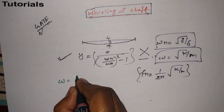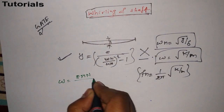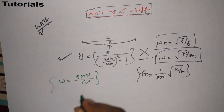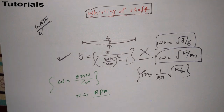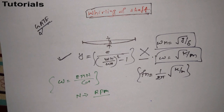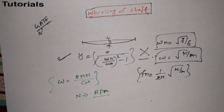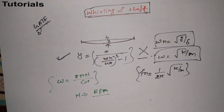One more thing we need to know: angular velocity ω equals 2πN divided by 60, where N is the revolution per minute of the shaft. These are all the important formulas for whirling of shaft. Now let's go to the problem.